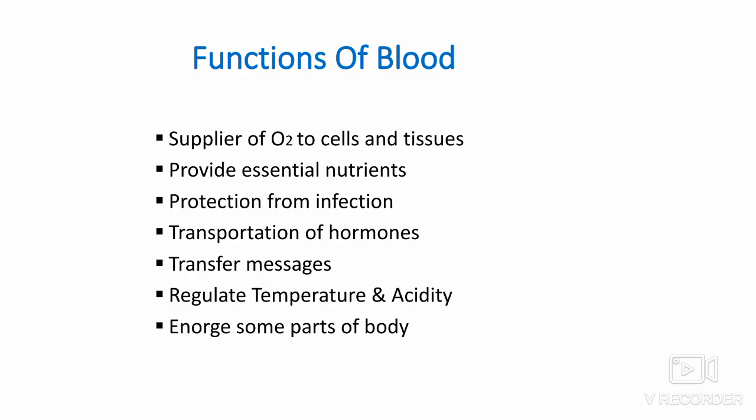Now let's know about the diverse functions of blood. Blood is the supplier of oxygen to our cells and tissues. It provides essential nutrients such as amino acids, fatty acids, and glucose to our cells. It protects our body from infections through WBCs. Blood can transport hormones from one part of the body to other parts, passing messages and carrying out many important processes. Also, it regulates acidity levels and temperature of the body, and can also enlarge some parts of the body when needed.